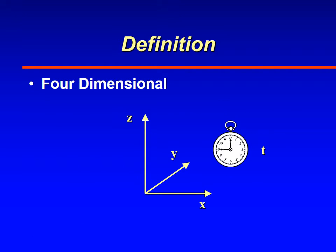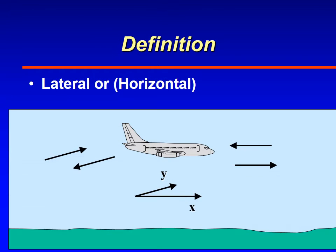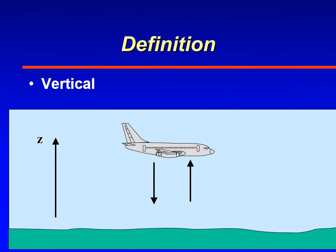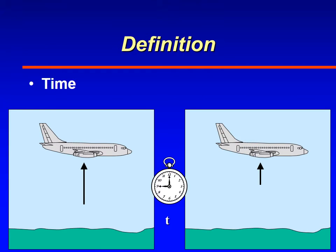Turbulence is four-dimensional, meaning that you can have turbulence in the horizontal or lateral plane, which would cause the aircraft to yaw — that's why aircraft have yaw dampers. Also, turbulence can happen in the vertical, meaning updrafts and downdrafts, and this is the most common type. It can also happen over a period of time, and that is the fourth dimension.